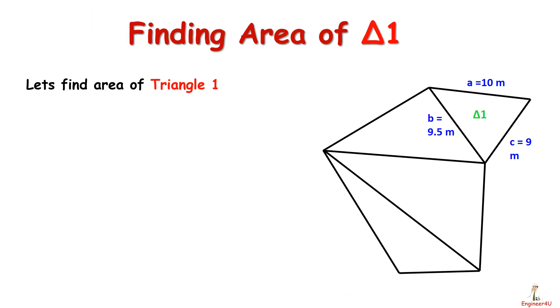Now let's find area of triangle number 1. First we will find value of S. Putting values of A, B, and C in formula of S, that is 10 plus 9.5 plus 9 divided by 2, we get S equals 14.25 meters.